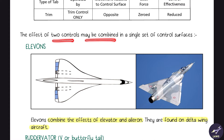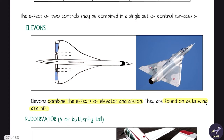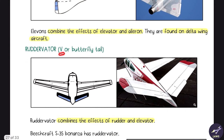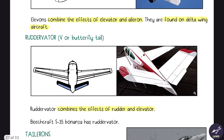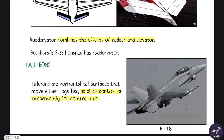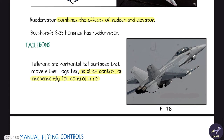The effect of two controls may be combined in a single set of control surfaces. Elevons combine the effect of elevators and ailerons and are found on delta wing aircraft. A ruddervator, also known as a V-tail or butterfly tail, combines the effects of rudder and elevator. Tailerons are horizontal tail surfaces that can function as both elevators and ailerons — as seen on the F-18.